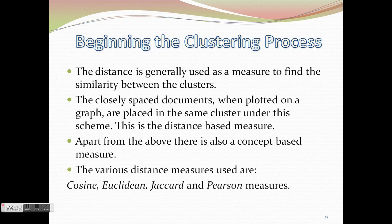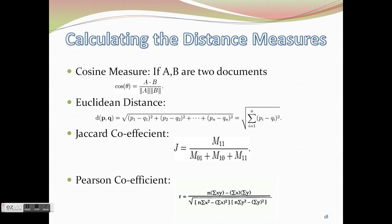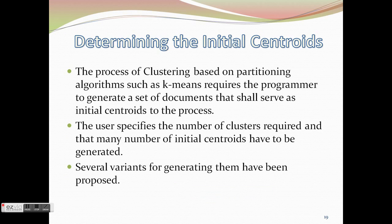To begin the clustering process, first the distance measures that have to be used have to be decided. The following four distance measures have been used in our project: namely cosine measure, Euclidean distance, Jaccard coefficient, and PCC.